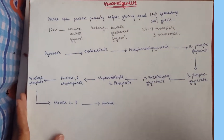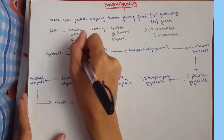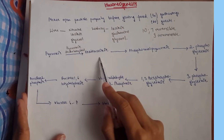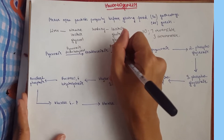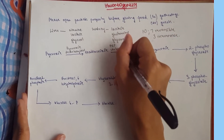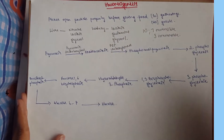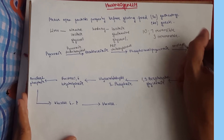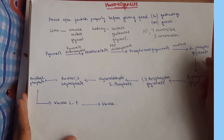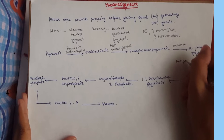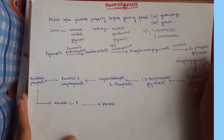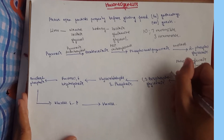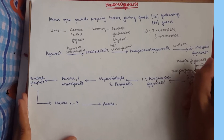Now for the enzymes: pyruvate to oxaloacetate is catalyzed by pyruvate decarboxylase. Oxaloacetate to phosphoenolpyruvate uses PEP carboxykinase (PEPCK). Two-phosphoglycerate uses enolase. From two to three-phosphoglycerate we have phosphoglycerate mutase. From three-phosphoglycerate to 1,3-bisphosphoglycerate we have phosphoglycerate kinase.